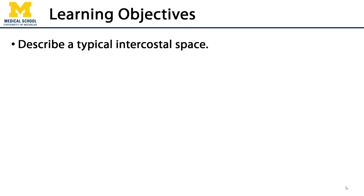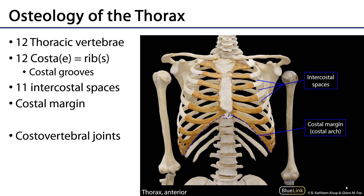Let's talk about intercostal spaces. In this video we'll discuss a typical intercostal space. Hearken back to the osteology of the thorax — there are 12 thoracic vertebrae, each of which articulates with a pair of costae or ribs, giving us 12 pairs of ribs. Between these pairs of ribs are intercostal spaces, which are named for the rib that is superior to them.